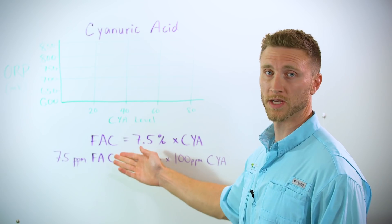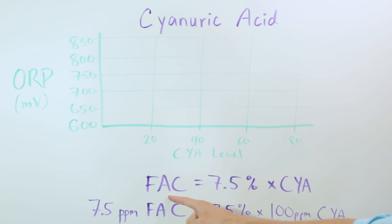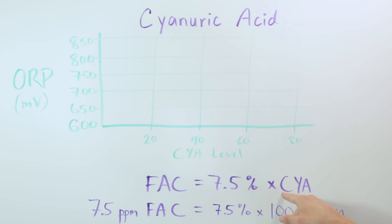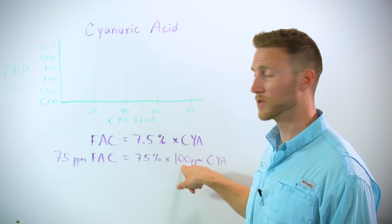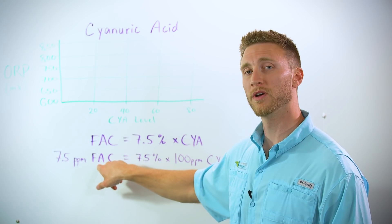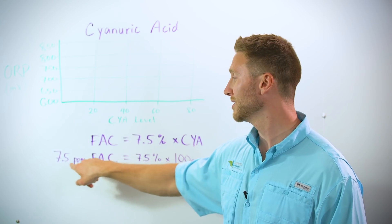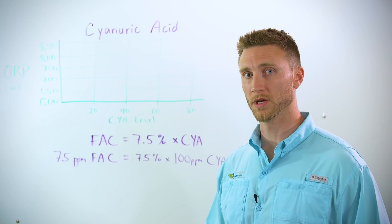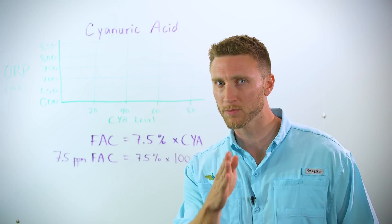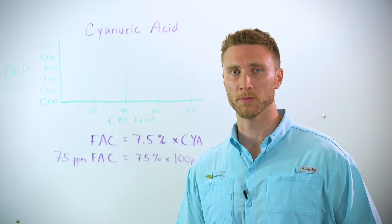The formula looks like this: free available chlorine is a factor of 7.5% times your cyanuric acid level. To simplify — if you have 100 parts per million cyanuric levels, you have zero free available chlorine until you exceed 7.5 parts per million. So your new zero point is 7.5 parts per million.